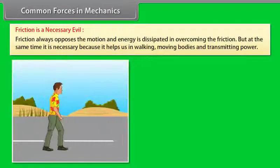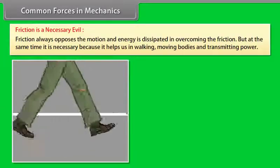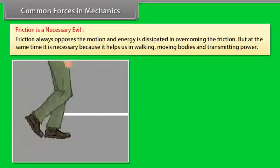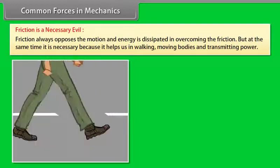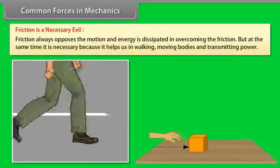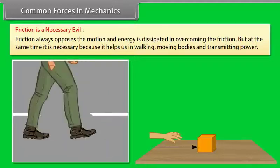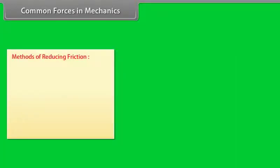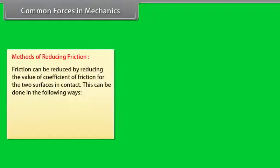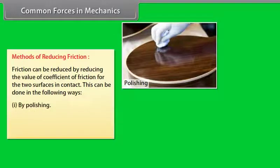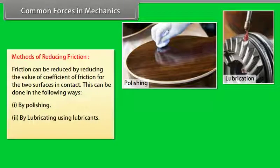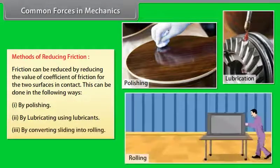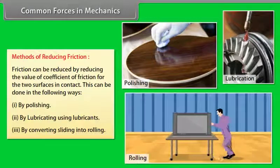Friction is a necessary evil. It always opposes motion and energy is dissipated in overcoming it, but it is also necessary as it helps us in walking, moving bodies, and transmitting power. Friction can be reduced by: polishing, lubricating using lubricants, and converting sliding into rolling.